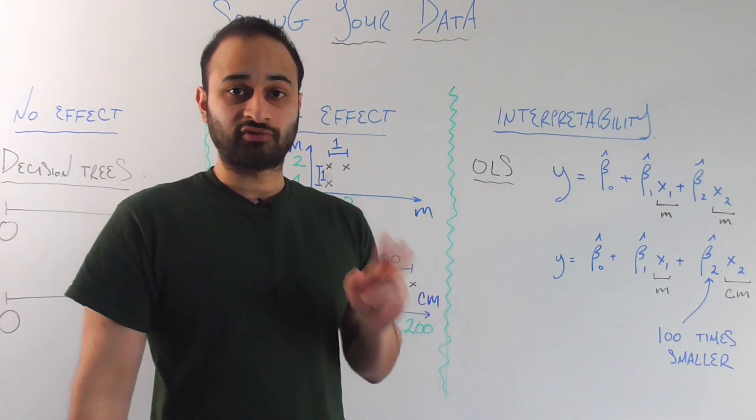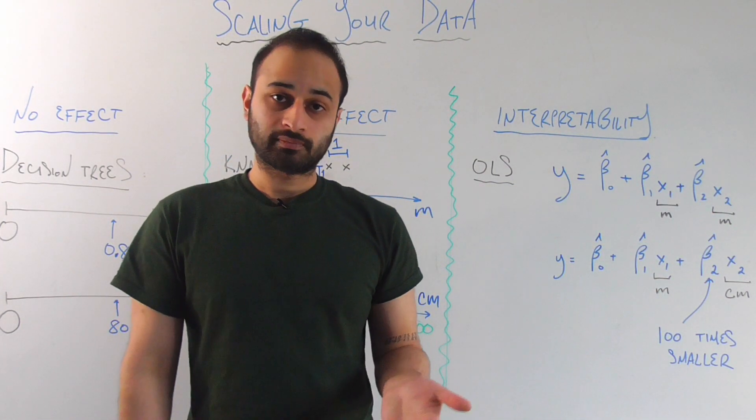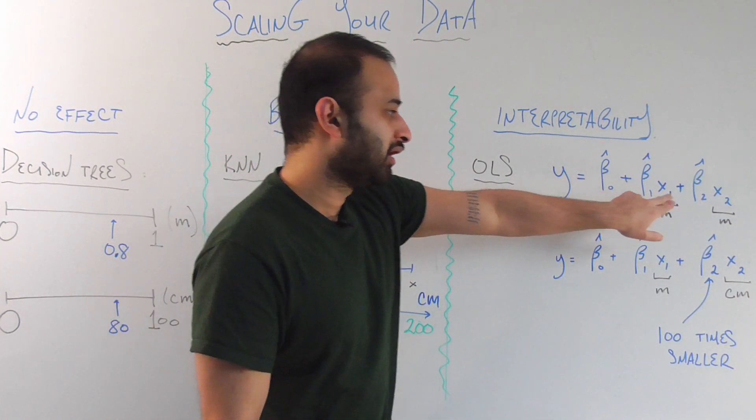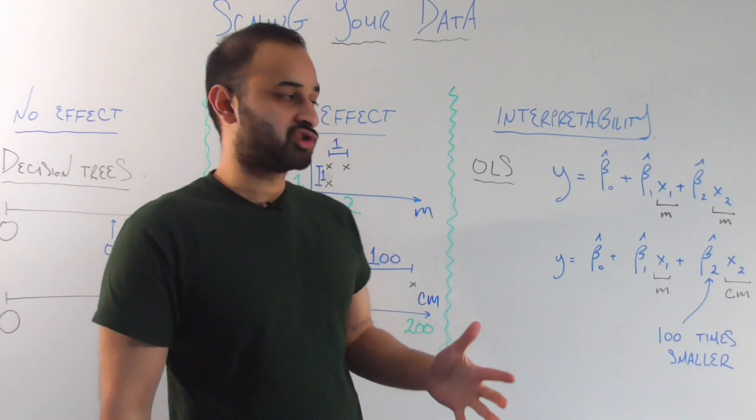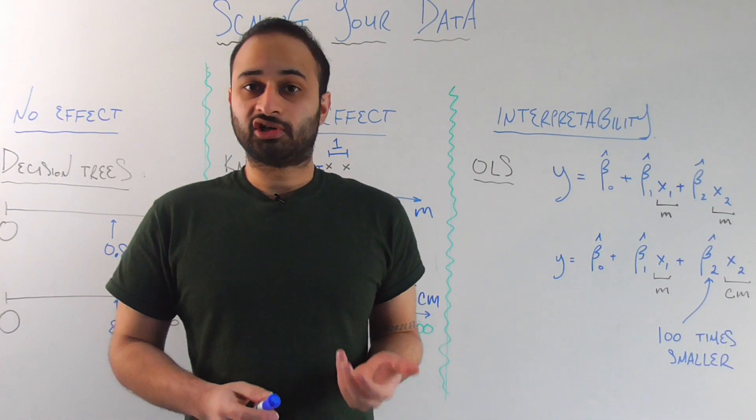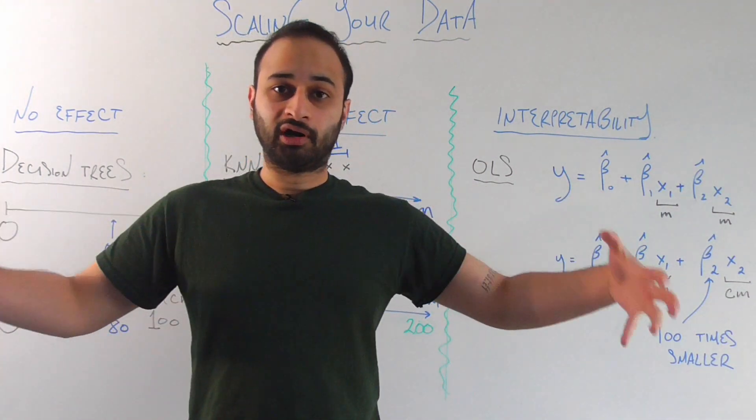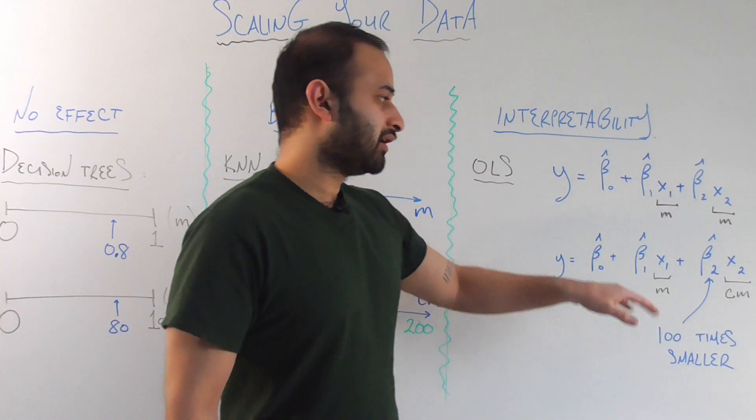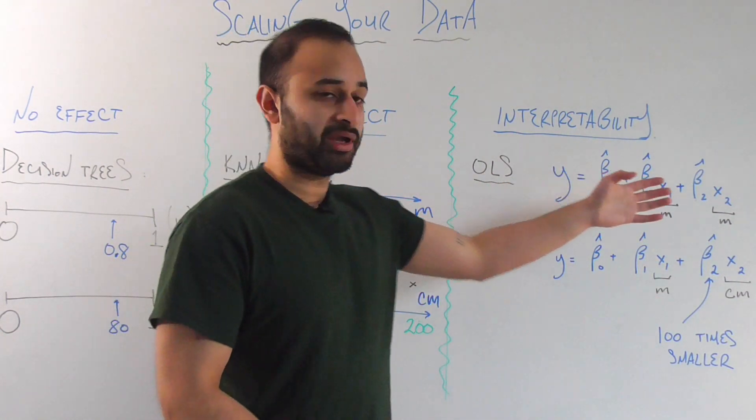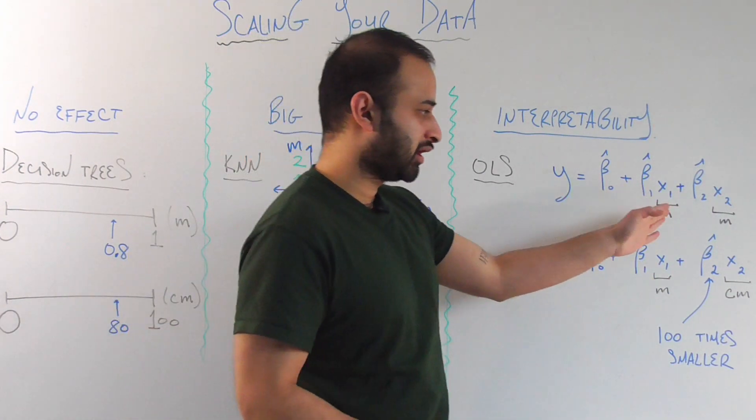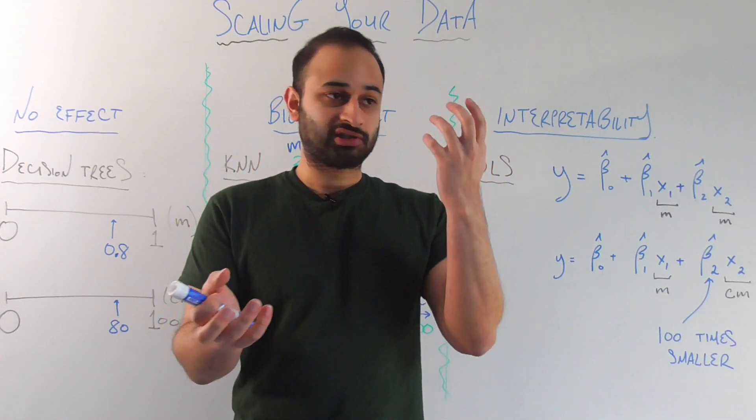So again, very simple example. We just have two variables, x1 and x2. Let's say first, again, they're both measured in meters. We find our beta1 hat and beta2 hat. So they're hat because they're just estimates of beta1 and beta2. And when it comes to interpreting our coefficients, we can just interpret them as they are. For example, if the coefficient beta1 is a lot bigger in absolute value than beta2, we would say that x1 has a much bigger impact on the response variable than beta2 does. And we're safe to say that because x1 and x2 are measured on the same scale. So we can just compare their betas one for one.